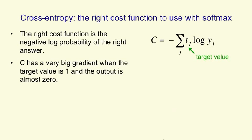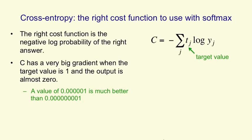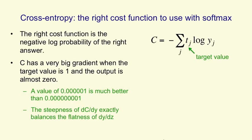It has a nice property: it has a very big gradient when the target value is 1 and the output is almost 0. A value of 1 in a million is much better than a value of 1 in a billion, even though it differs by less than a millionth. So when you make the output value increase by less than one millionth, the value of C improves by a lot — meaning there's a very, very steep gradient for C. One way of seeing this is that if you believe the 1 in a million, you'd be willing to bet at odds of 1 in a million and lose a million dollars; if you thought the answer was 1 in a billion, you'd lose a billion dollars making the same bet. So we get a nice property that the cost function C has a very steep derivative when the answer is very wrong.